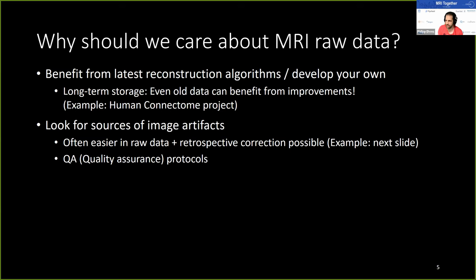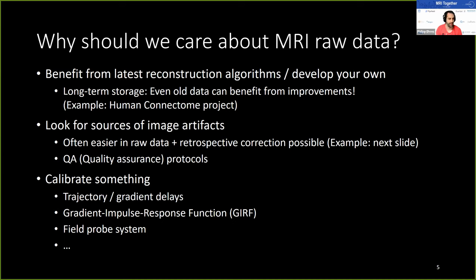It is also often easier to find sources of image artifacts in raw data. For a sequence developer, it's helpful to look at raw data to see when there's a problem and find out what's going wrong — and it's also often possible to retrospectively correct for artifacts. Quality assurance protocols also often make use of raw data to detect problems like spikes or to look at noise. Finally, there's often also the need to calibrate something on the basis of raw data, for example to obtain gradient trajectories, gradient delays, or the gradient impulse response function.